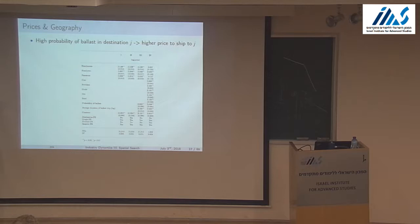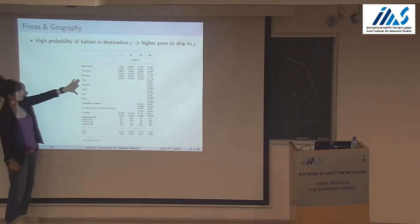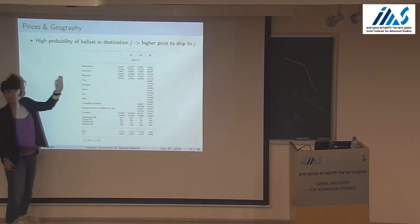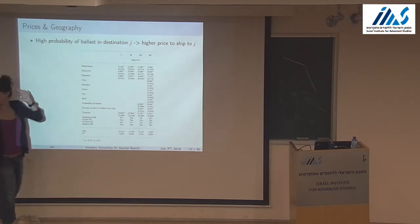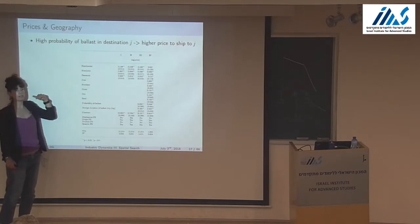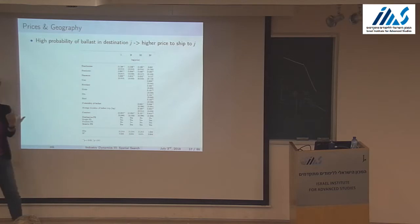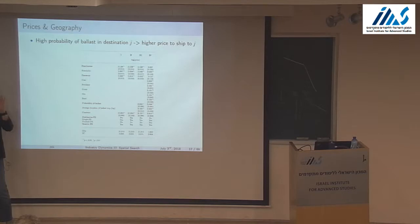In the last column, adding the product carried — known for very few contracts — shows that the more expensive the product shipped, the higher the price you pay to ship it. This is interesting and not something you can instantly explain with a frictionless model.